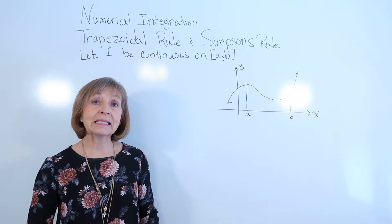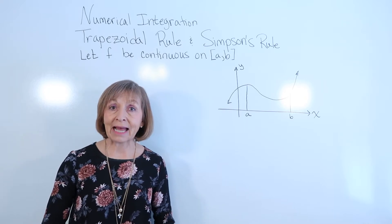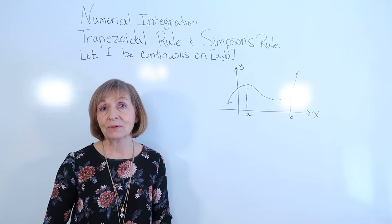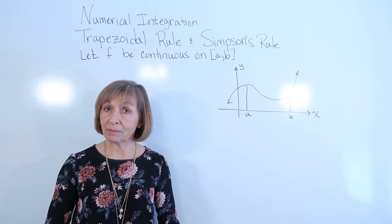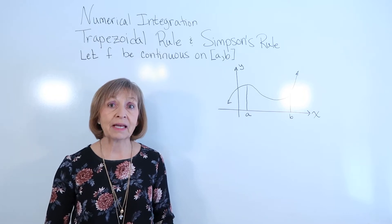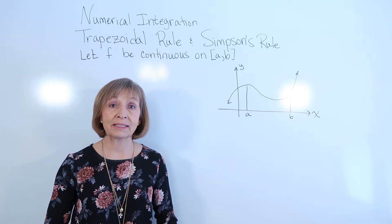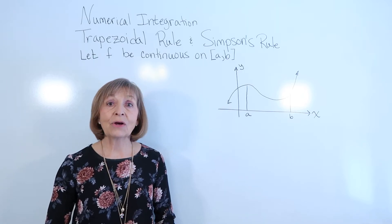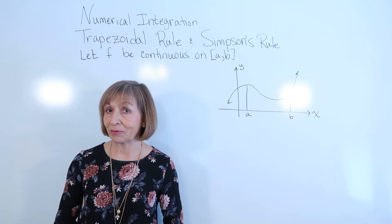Simpson's rule is where we take sub-intervals and fit our curve with parabolas, which again gives us a better approximation with fewer sub-intervals, corresponding to fewer calculations needed to attain a specific level of accuracy. So let's get started with the background of both of these rules.